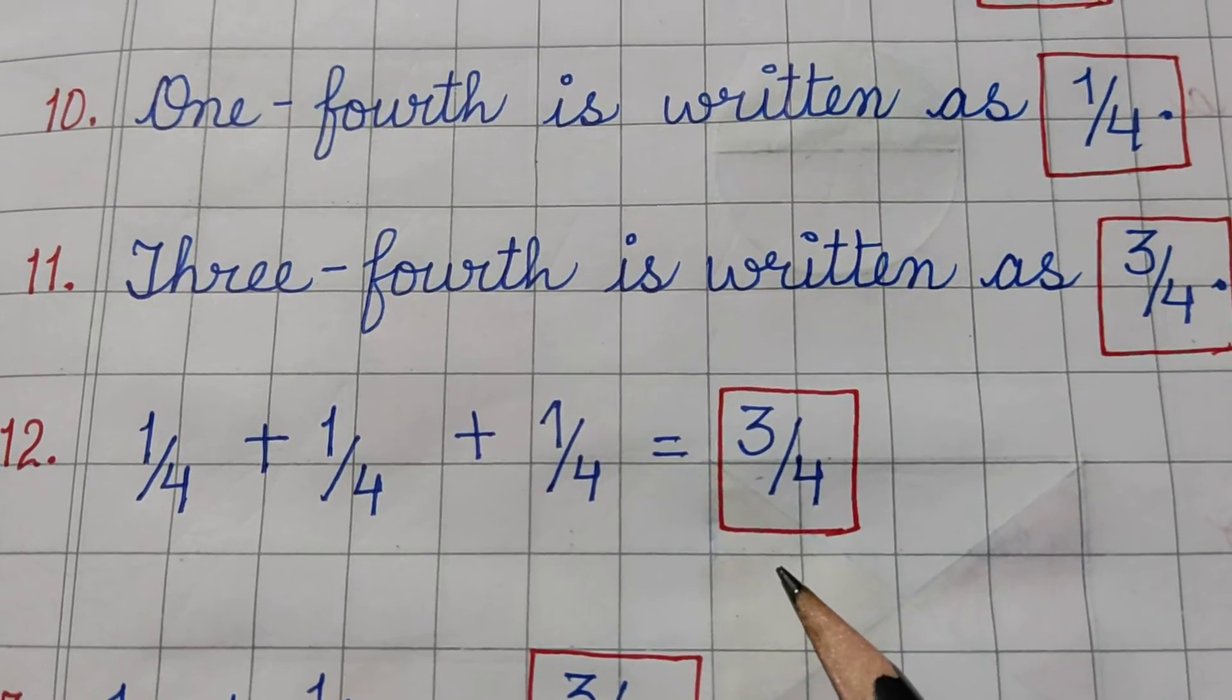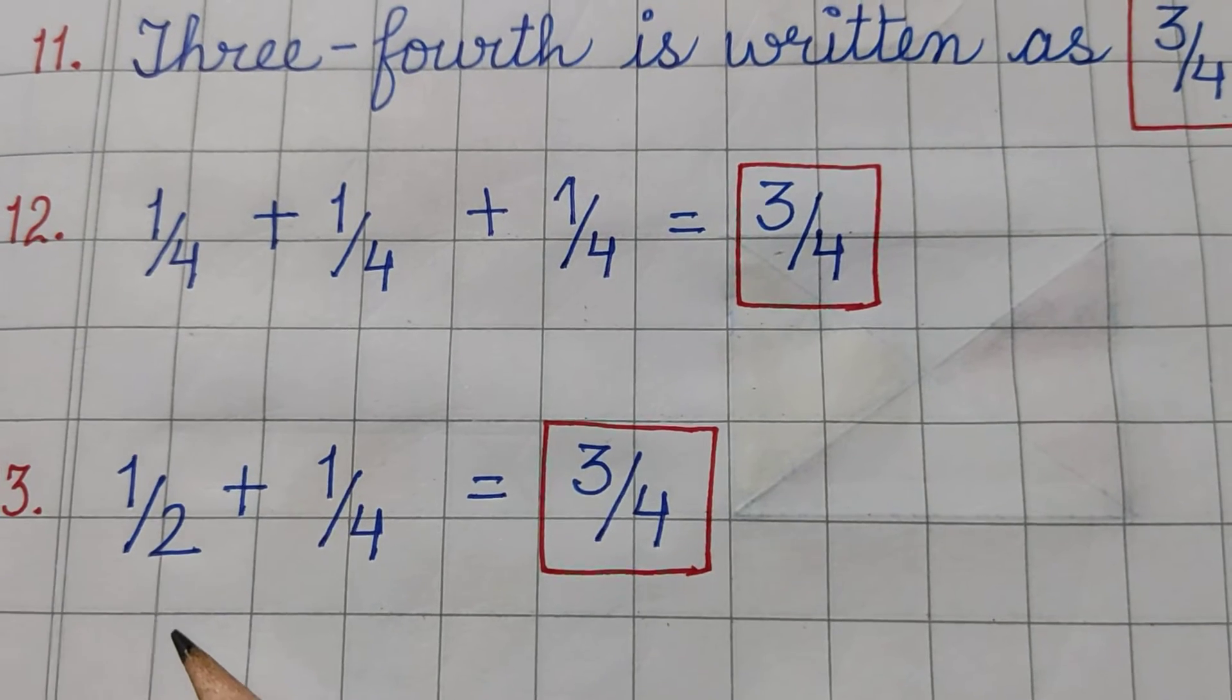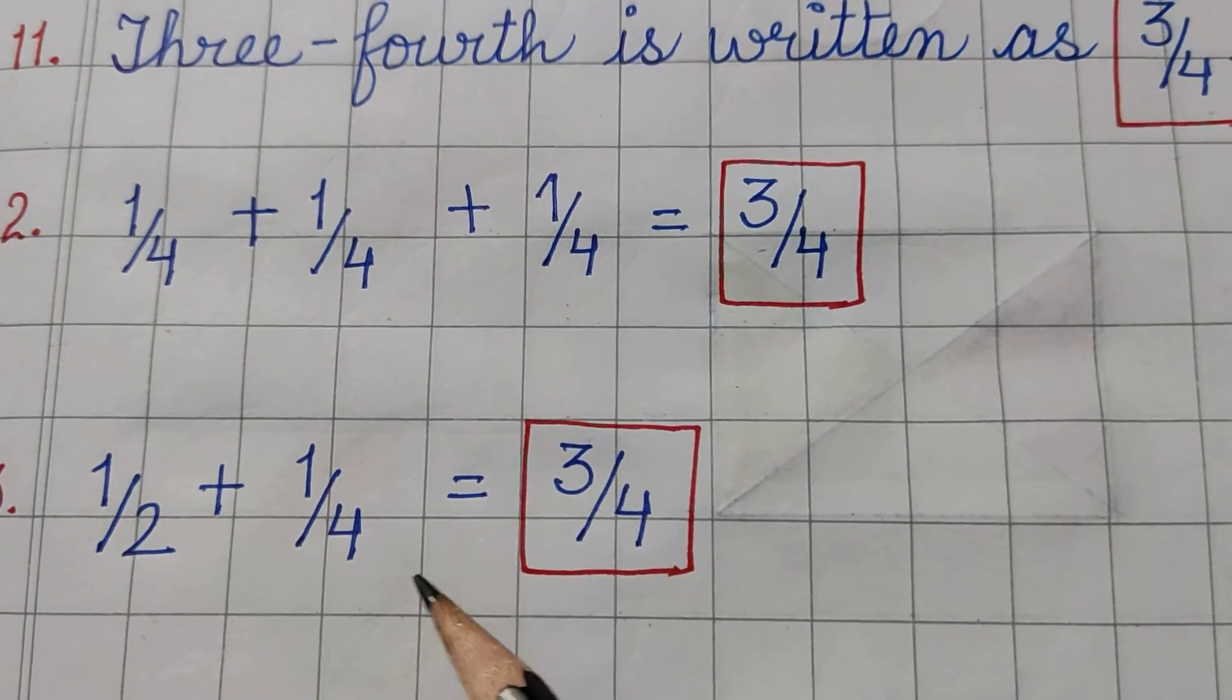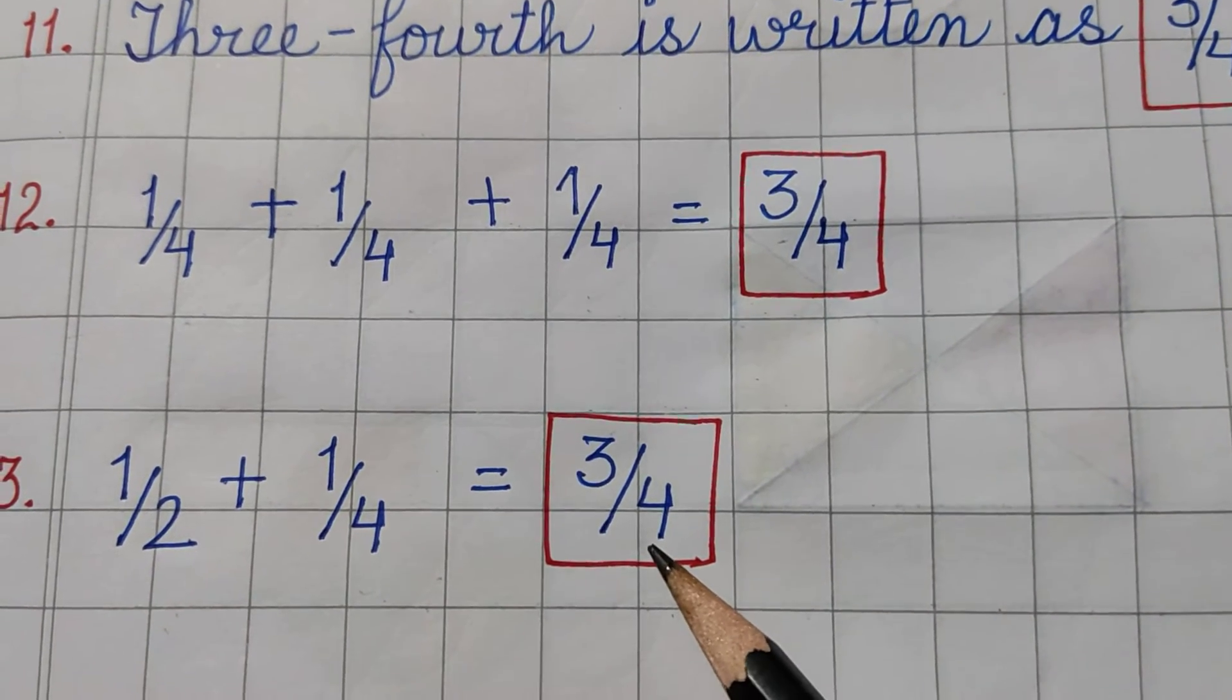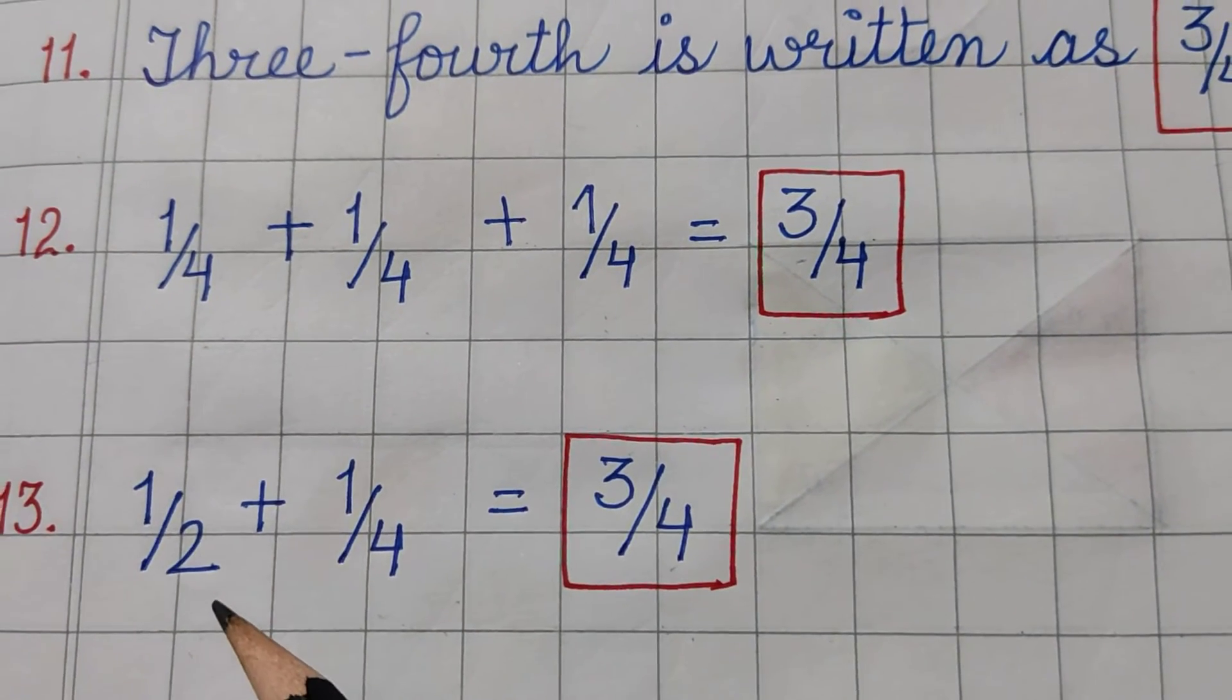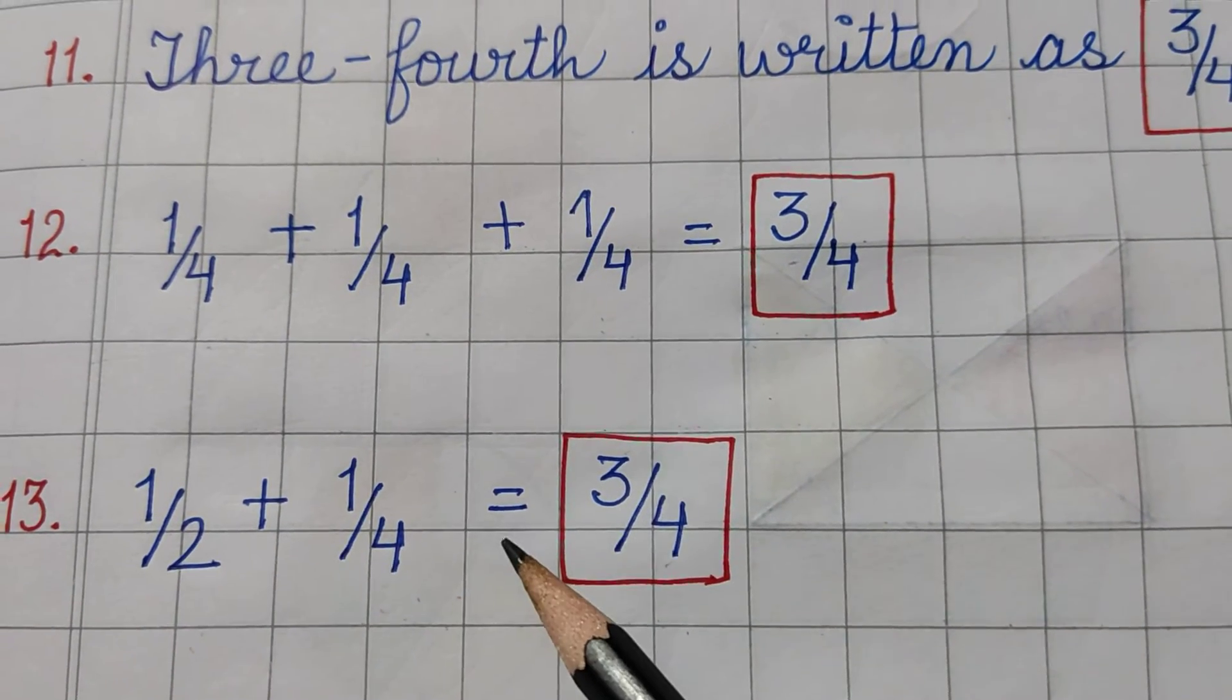13th part, 1 upon 2 that is half, plus 1 upon 4 that is quarter. Half plus quarter is equal to 3 quarters. 1 upon 2 plus 1 upon 4 is equal to 3 upon 4.